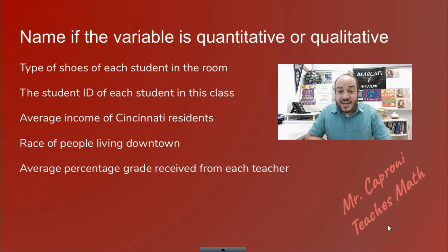The average income of Cincinnati residents. Well that's measuring how much they're making, so that's going to be quantitative. The race of people living downtown. If we're identifying them by their race then that's going to be qualitative. Last, the average percent grade received from each teacher. This is actually a measurement of how well you're doing in the class, so this is going to be quantitative.